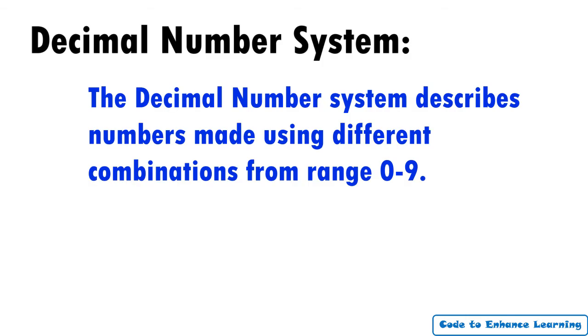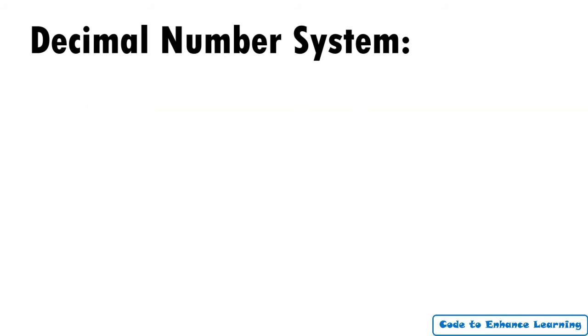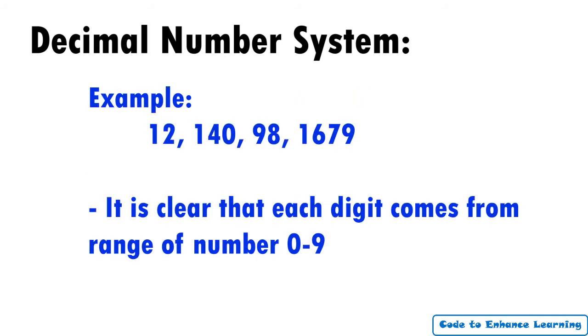The decimal number system describes numbers using different combinations from range 0 to 9. Two examples of decimal numbers are on the screen. It is clear that each digit comes from a range of numbers between 0 to 9.